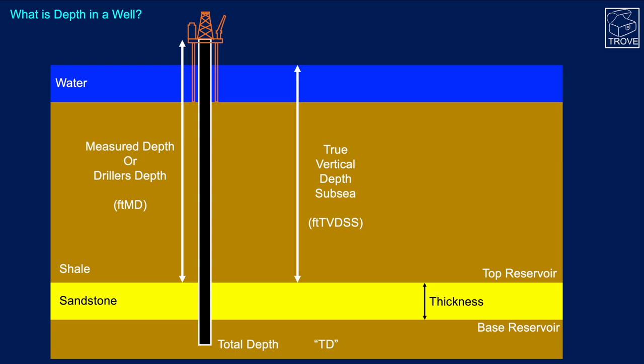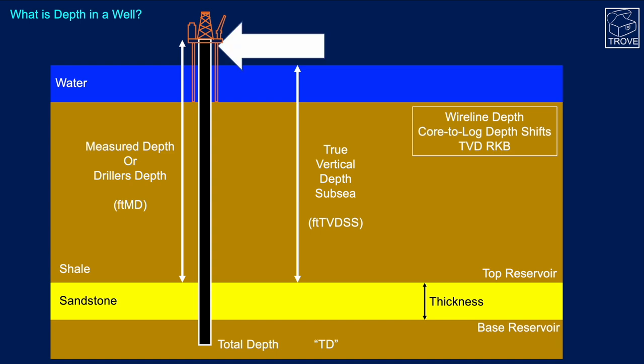Often we're looking at an interval of interest, defined as the top reservoir and a base reservoir. We're interested in the thickness, and we're going to show some of the subtleties and strange things that happen when measuring depth. I'm not going to cover wireline depth, quarter log depth shifts, or why we'd quote total vertical depth RKB in this video.